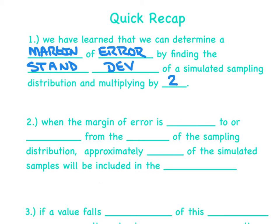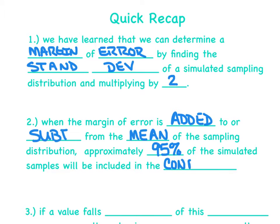When the margin of error is either added to or subtracted from the mean of the sampling distribution, approximately 95% of the simulated samples will be included in the confidence interval.